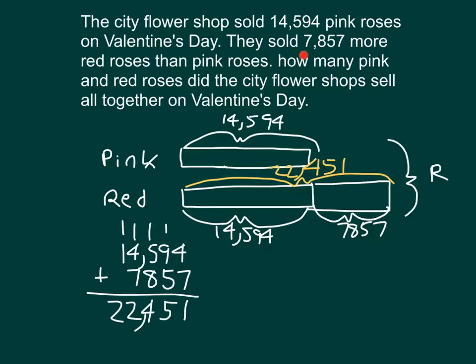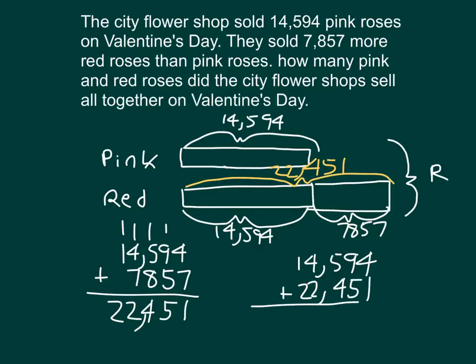The question being asked is how many pink and red roses were sold on that day. So I will take both bars and put them together. Lining up our digits and carefully adding those numbers together and regrouping where needed, I get 37,045.